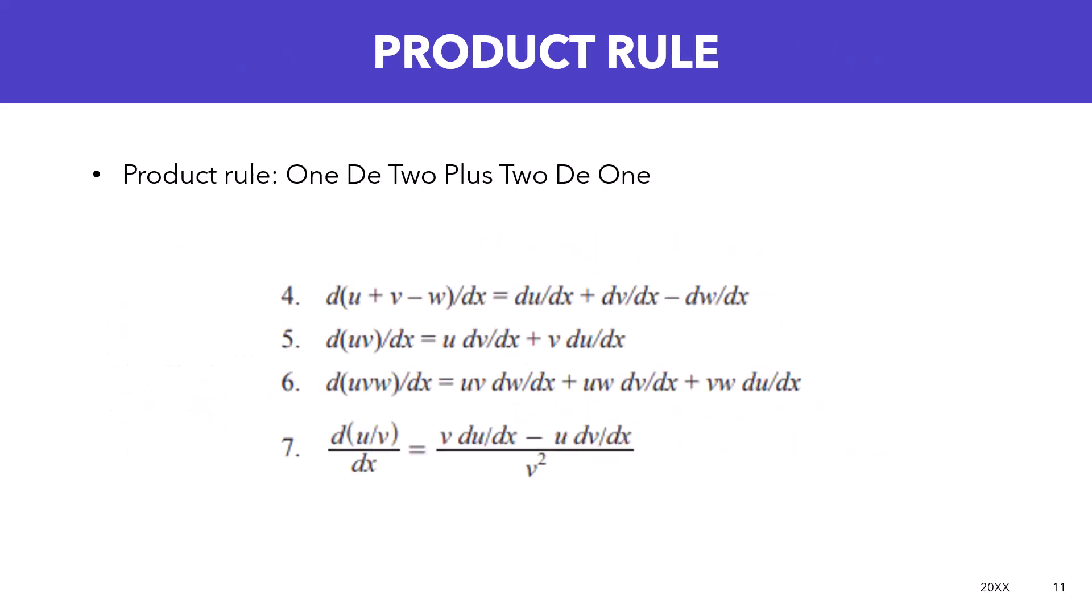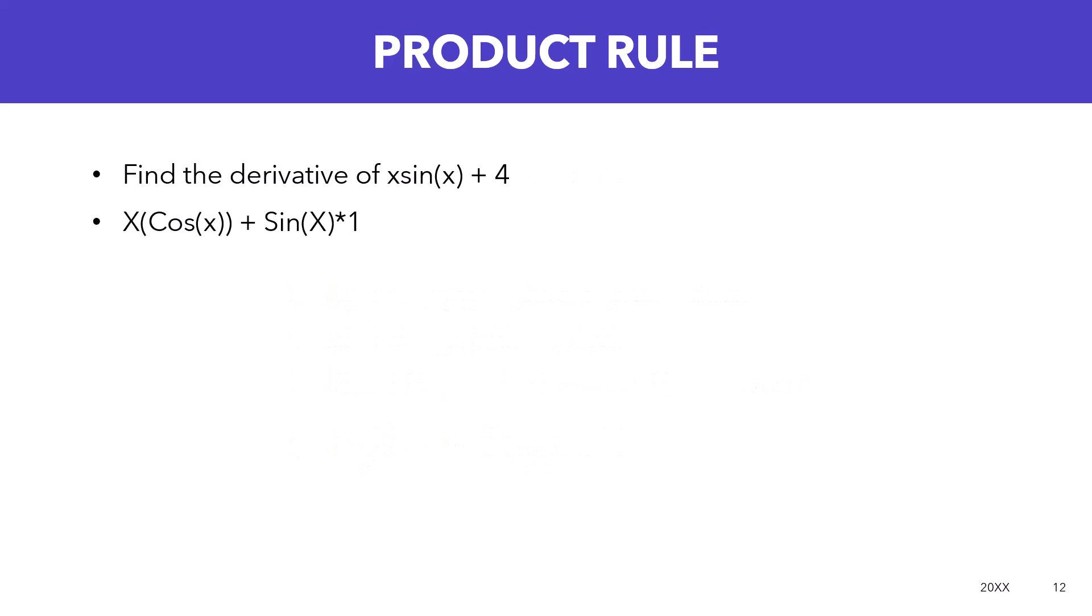What is another derivative rule that we can use? Well, this one is called the product rule, and when I learned this, typically we would use the phrase 1d2 plus 2d1 to help us memorize how to solve these certain derivatives. You can see the official notation down there, but just remember that phrase: 1d2 plus 2d1 to help understand how to solve these problems.